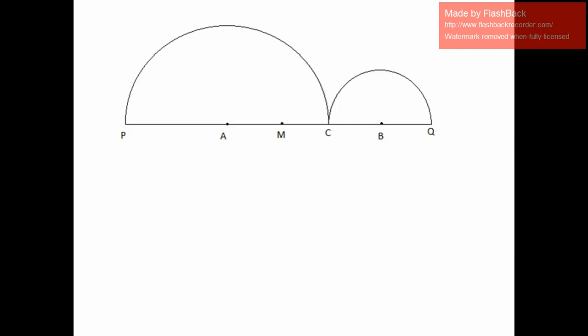PQ is a segment and there are two semicircles on this segment in the manner shown in the diagram. Our task is to show that AM is equal to BC.